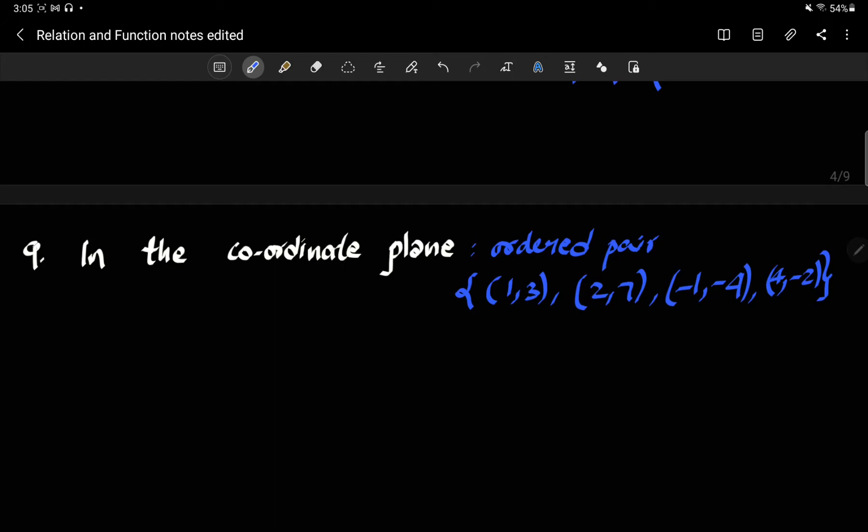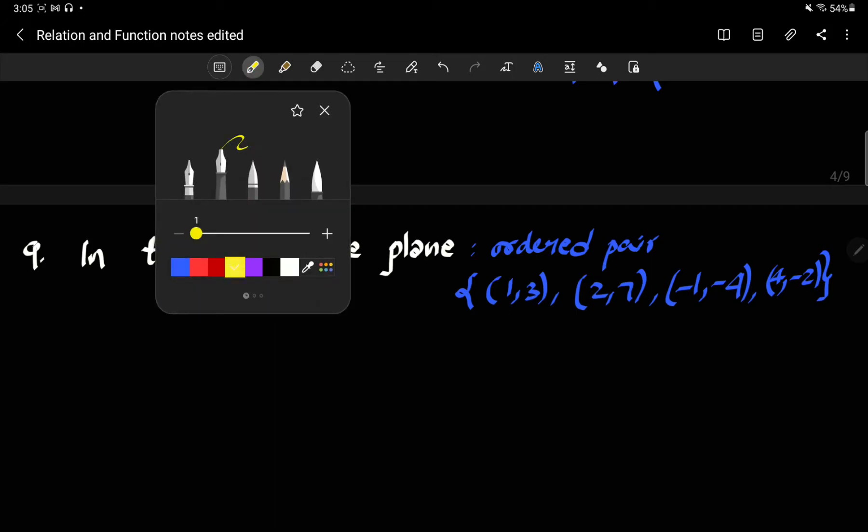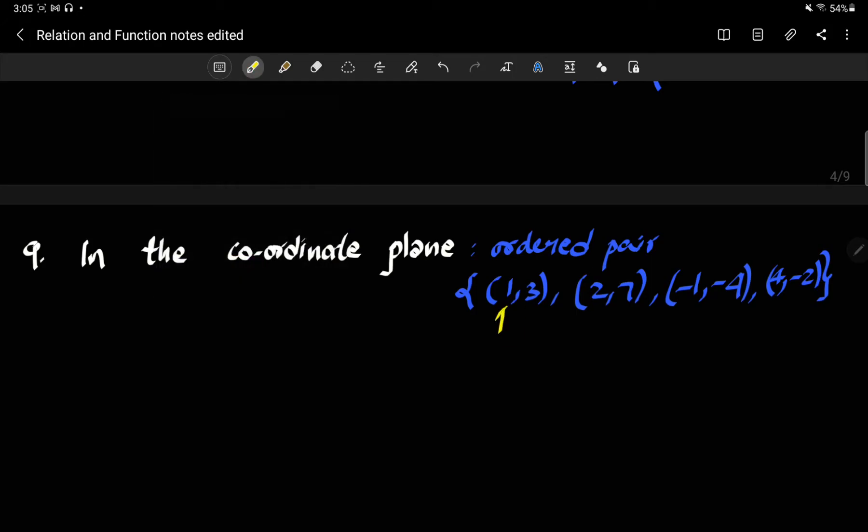The ordering here says that these are all the first entries. So just so you remember, these are the first entries, which were also the domains, which we were also referred to as inputs. And then you have the second entries, which we refer to as range, which were further referred to as outputs.